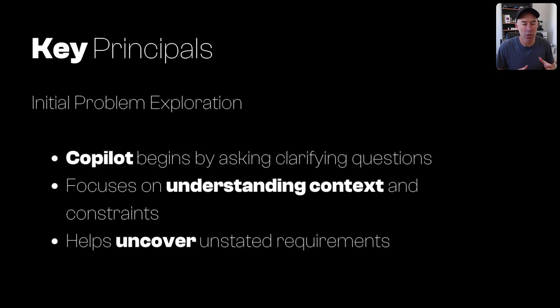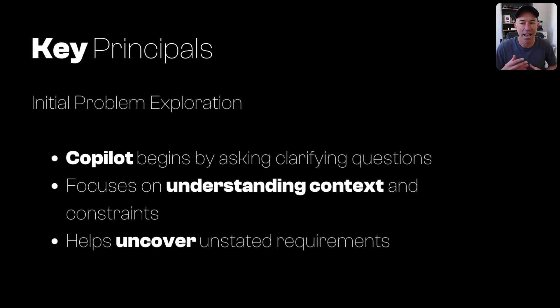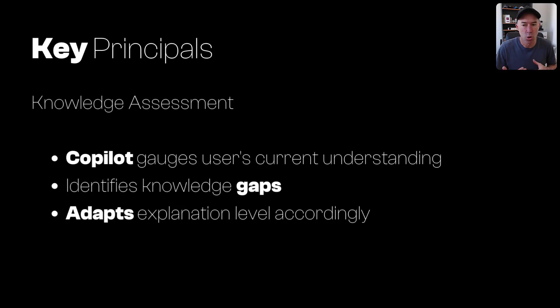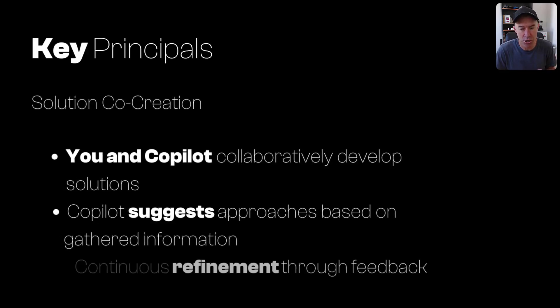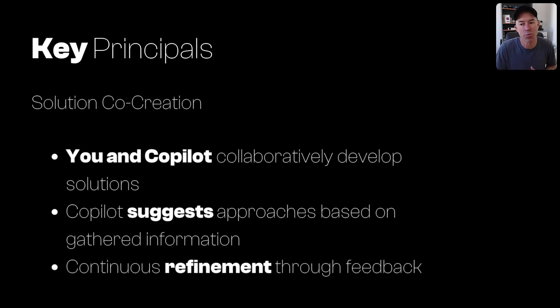The key principles with this type of model: first, the initial problem exploration — Co-Pilot begins by asking clarifying questions to focus on understanding, context, and constraints, which helps uncover unstated requirements. We then go into a knowledge assessment, where Co-Pilot can gauge your current understanding, identify knowledge gaps, and adapt the explanation level accordingly. And then solution co-creation, where you and Co-Pilot collaboratively develop solutions, with Co-Pilot suggesting approaches based on gathered information and providing continuous refinement through feedback.